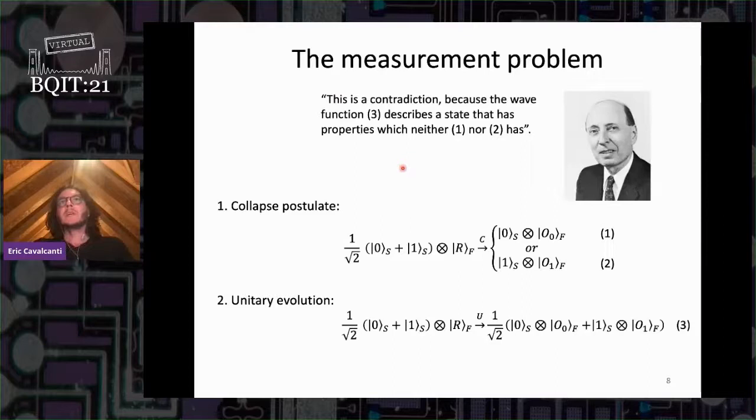This is in a nutshell the measurement problem. You may avoid this conclusion if you consider quantum states describing not states of reality but states of information. Thinking of the wave function as epistemic allows for the resolution of the EPR paradox but not of Bell's theorem. So can we make a stronger argument?